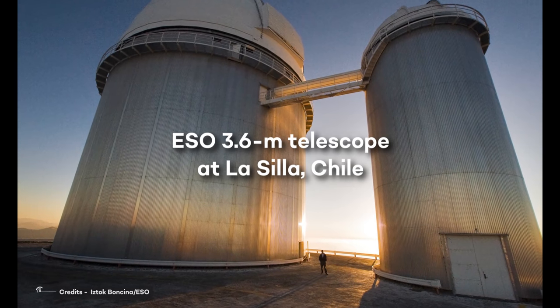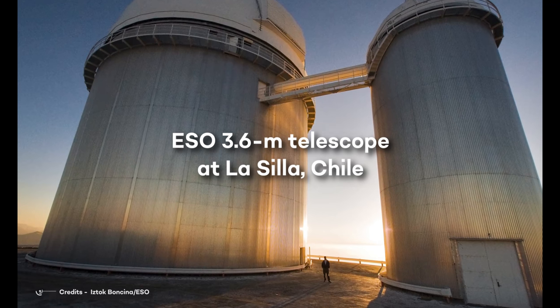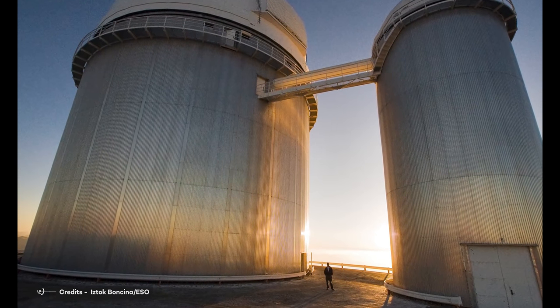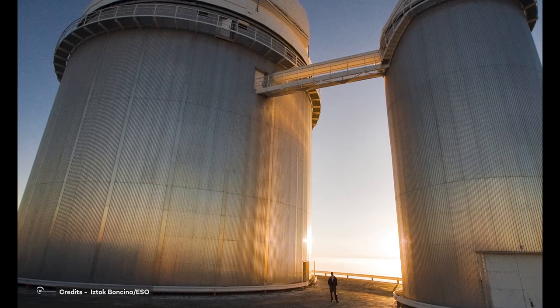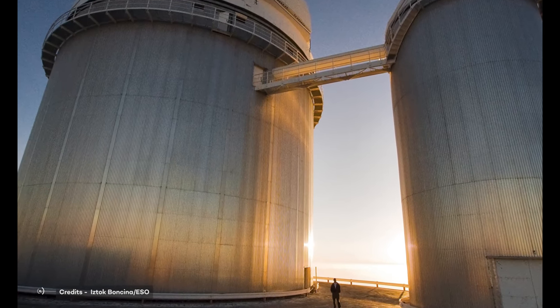Located on the ESO 3.6-meter telescope at La Silla, Chile, HARPS is able to measure velocities with a precision better than 1 meter per second, or 3.6 kilometers per hour.